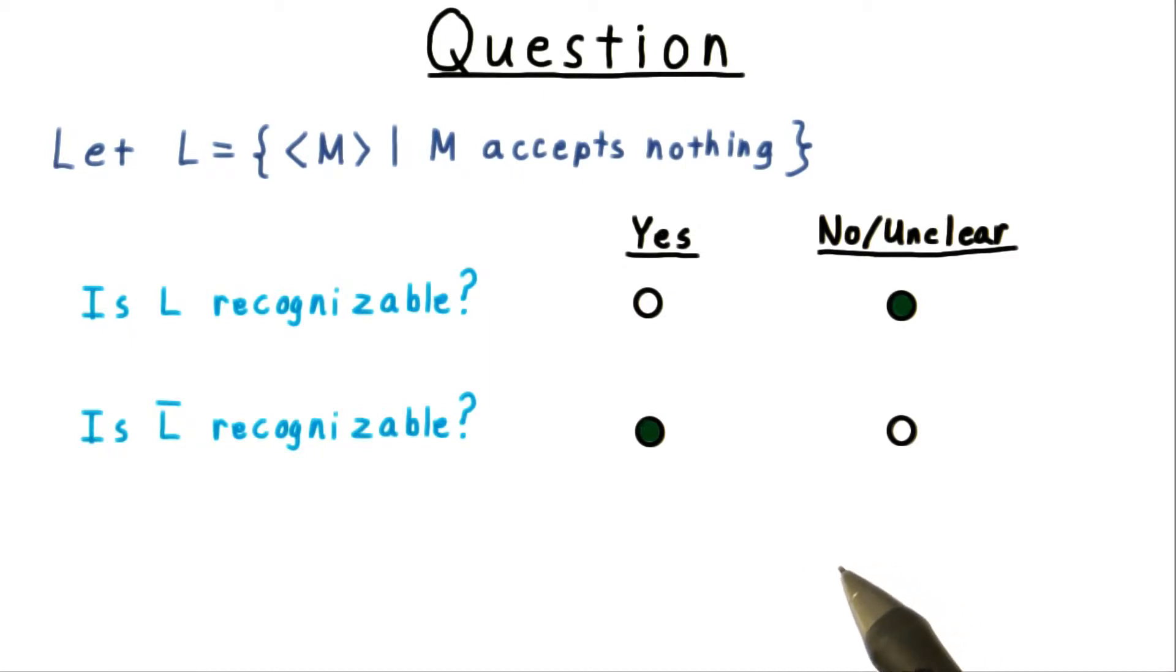Note that there are some Turing machines that accept nothing, that we can tell accept nothing. We can examine the code, for instance, of the Turing machine that immediately transitions to the reject state, no matter what. And we can see that such a Turing machine never accepts anything.